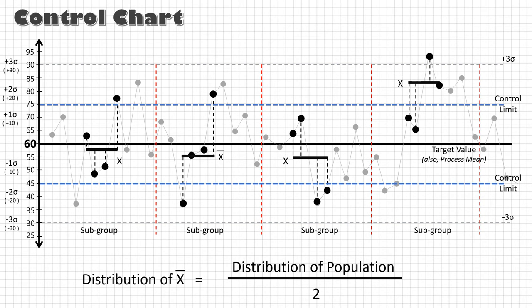That means if my sample size is 4, then the mean of these samples, X-bars, will lie within half of the distribution of the population. If X-bar goes outside these control limits, it shows that a special cause has occurred and the process location, the mean, has changed.